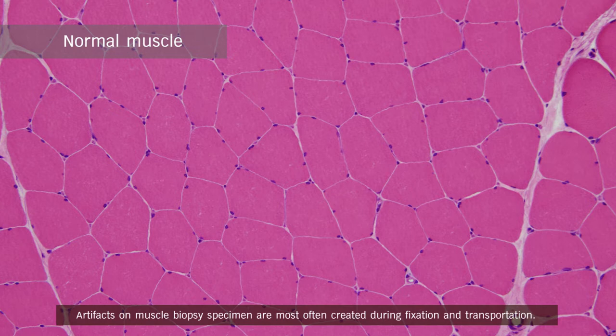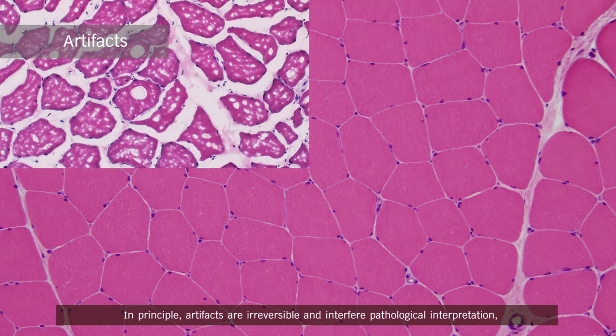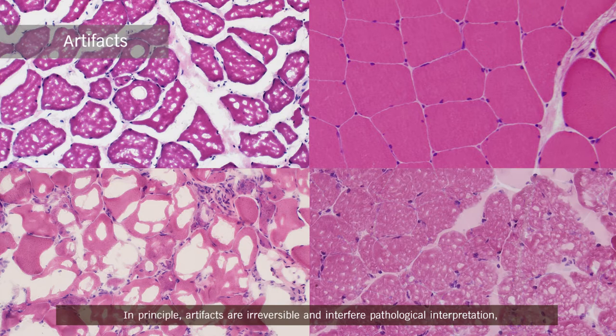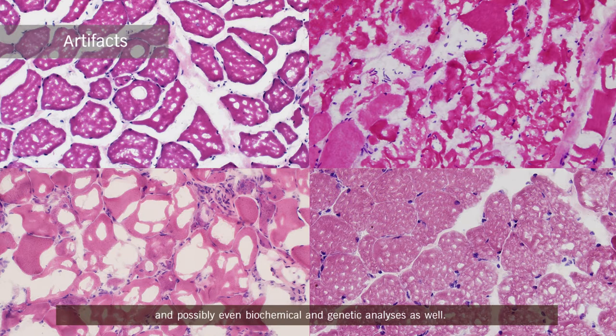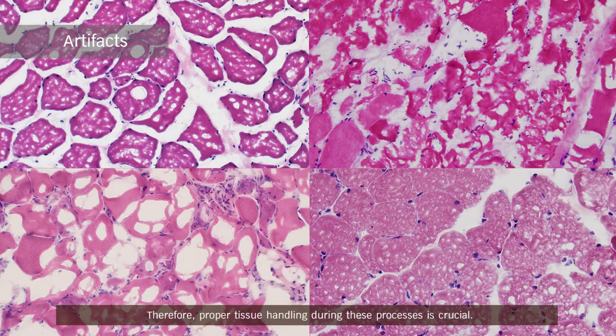Artifacts on muscle biopsy specimens are most often created during fixation and transportation. In principle, artifacts are irreversible and interfere with pathological interpretation, and possibly even biochemical and genetic analysis as well. Therefore, proper tissue handling during these processes is crucial.